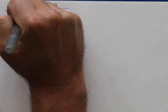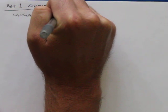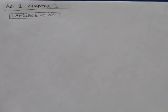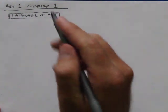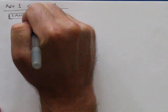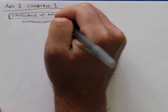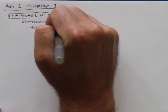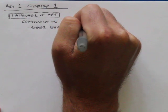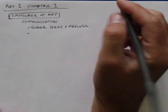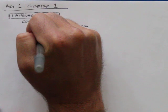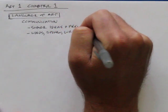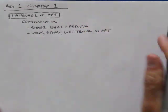So we're going to start talking about the language of art. These notes come directly from the book. I just took the most important things out. As you read the book, these are the most important parts. The language of art: art is used as a communication tool. We're trying to communicate something with art. We share our ideas and feelings. We can use words, spoken or written, in art.